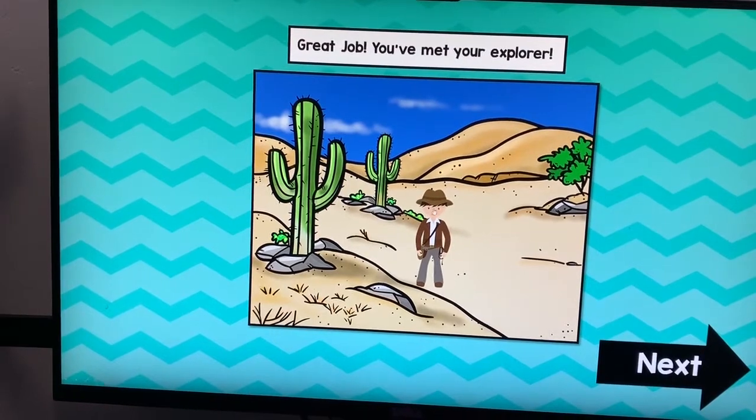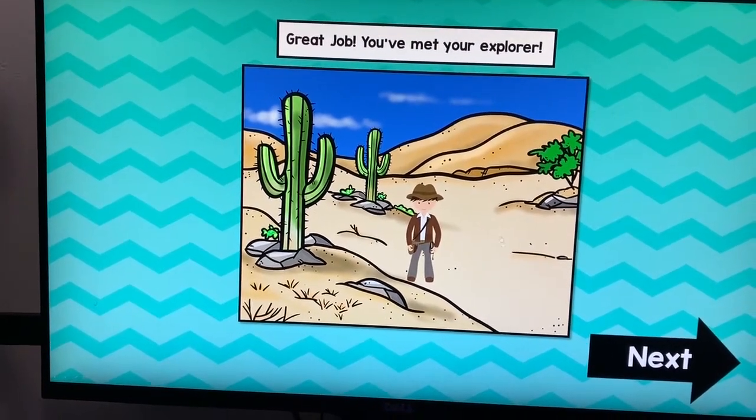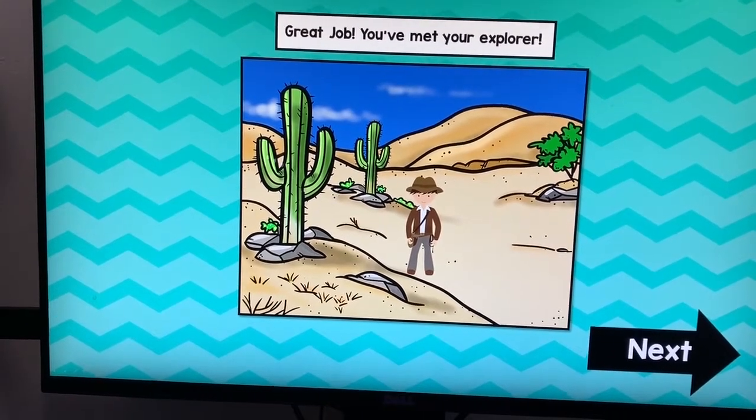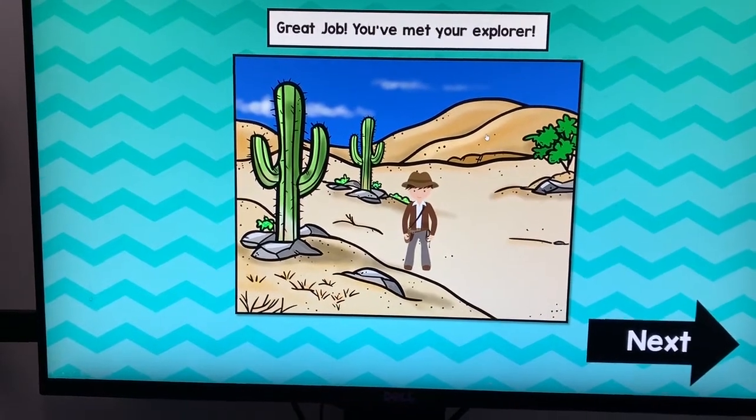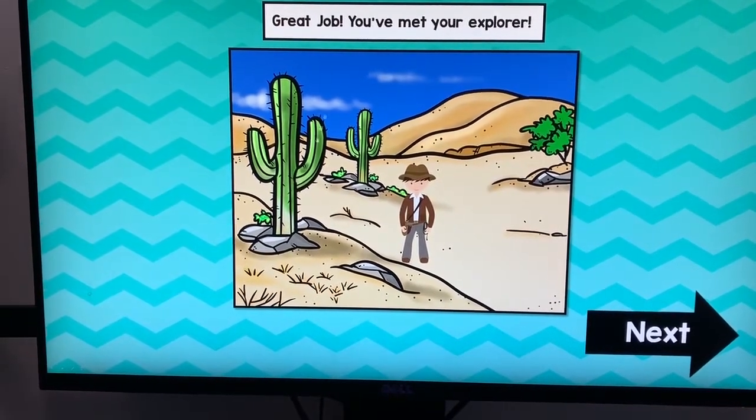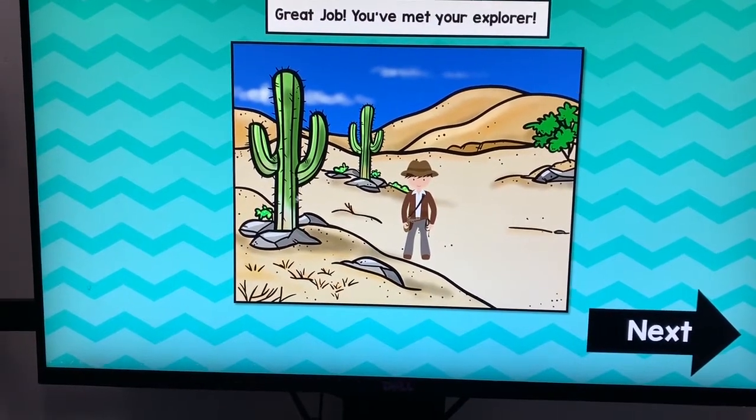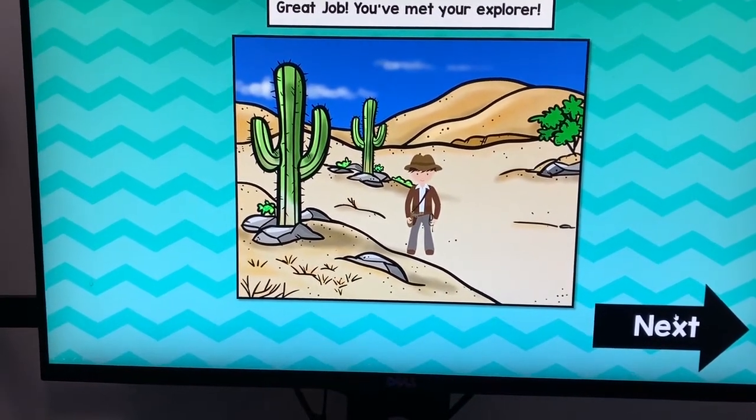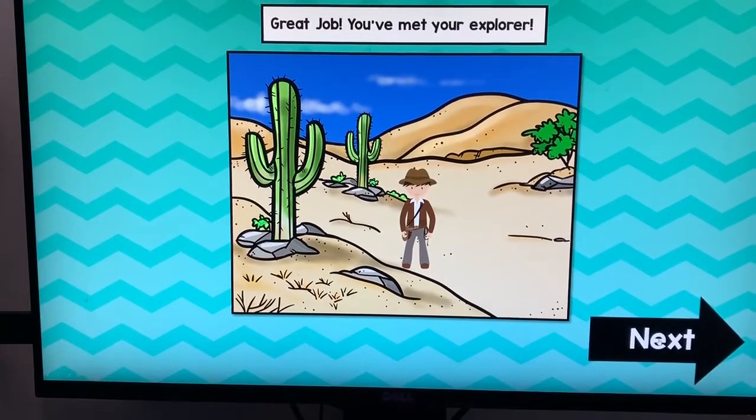So here, they first meet their explorer. And each time they get a right answer, it's going to further the storyline. So each topic that we saw here at the beginning, there's three topics, each one has its own story. There's eight questions for each topic, so there's 24 total. Or not topic, sorry, each differentiated way to do it.